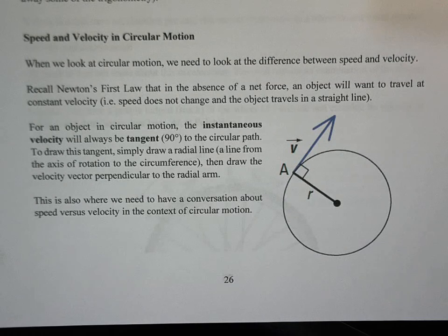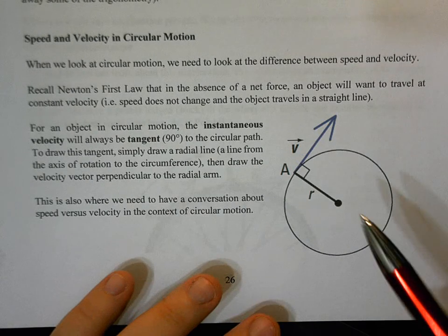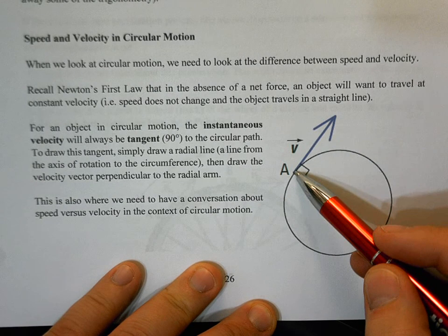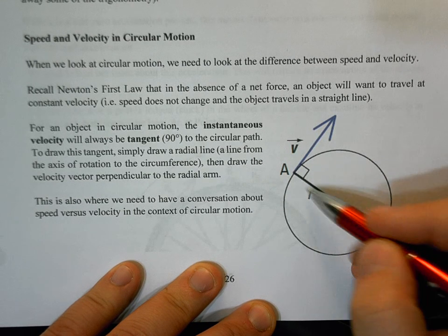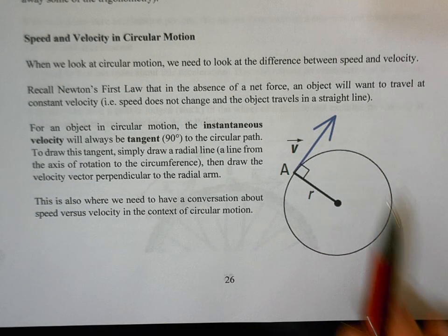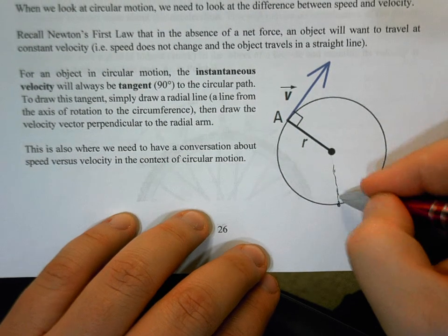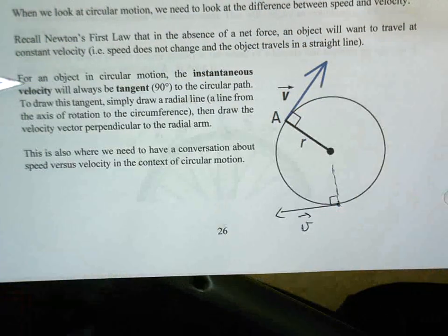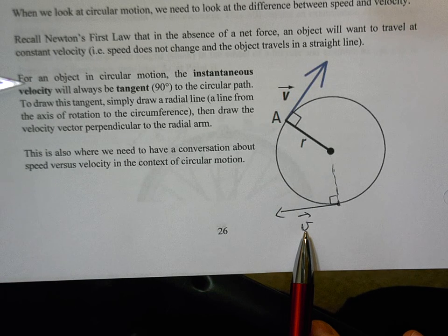When we have an object in circular motion, we talk about its instantaneous velocity. The instantaneous velocity in circular motion is always 90 degrees to the radial arm. So wherever we draw our velocity vector on the circle, we draw it at 90 degrees to the radius at that point. The magnitude of this velocity — the speed — is not changing.